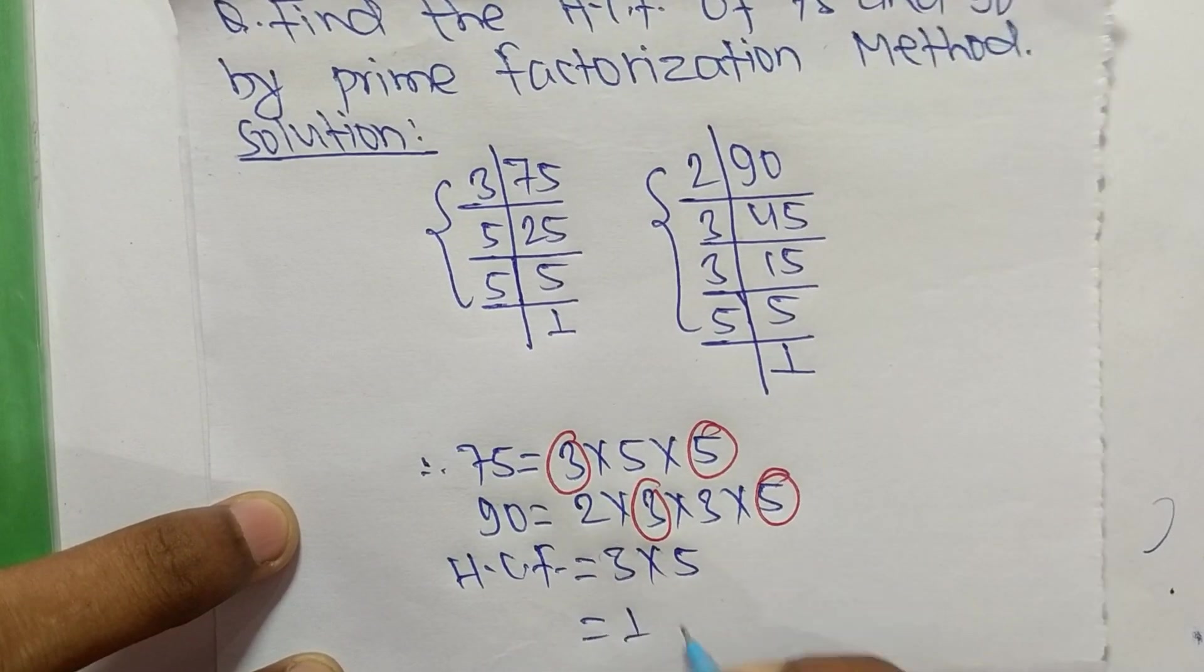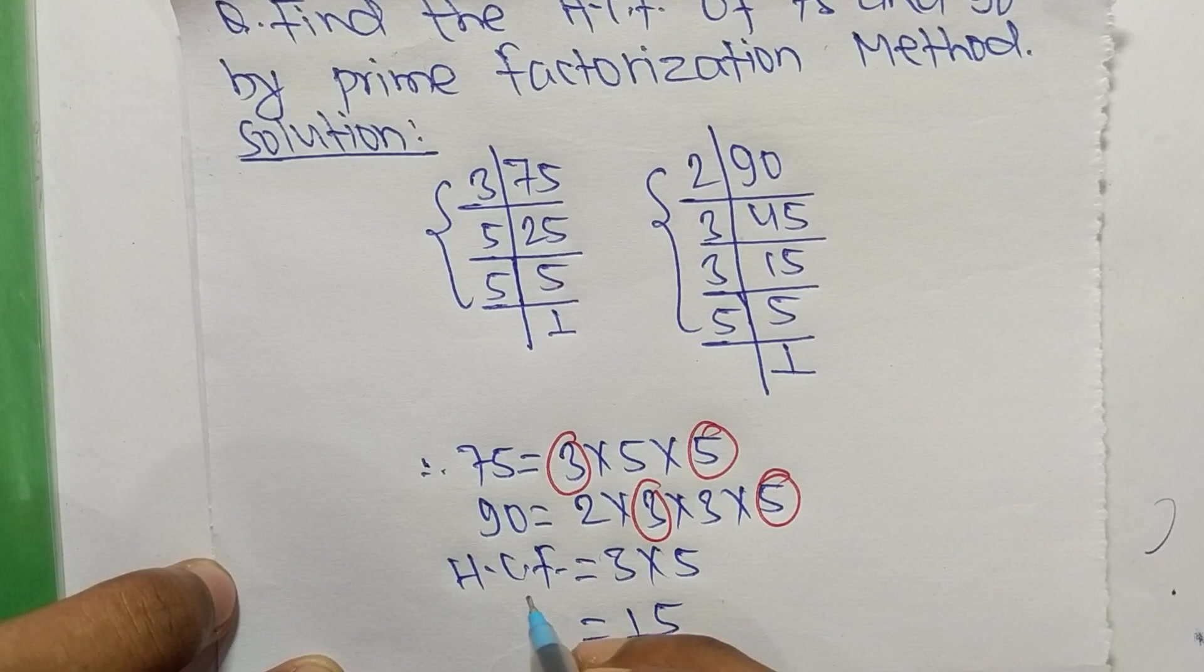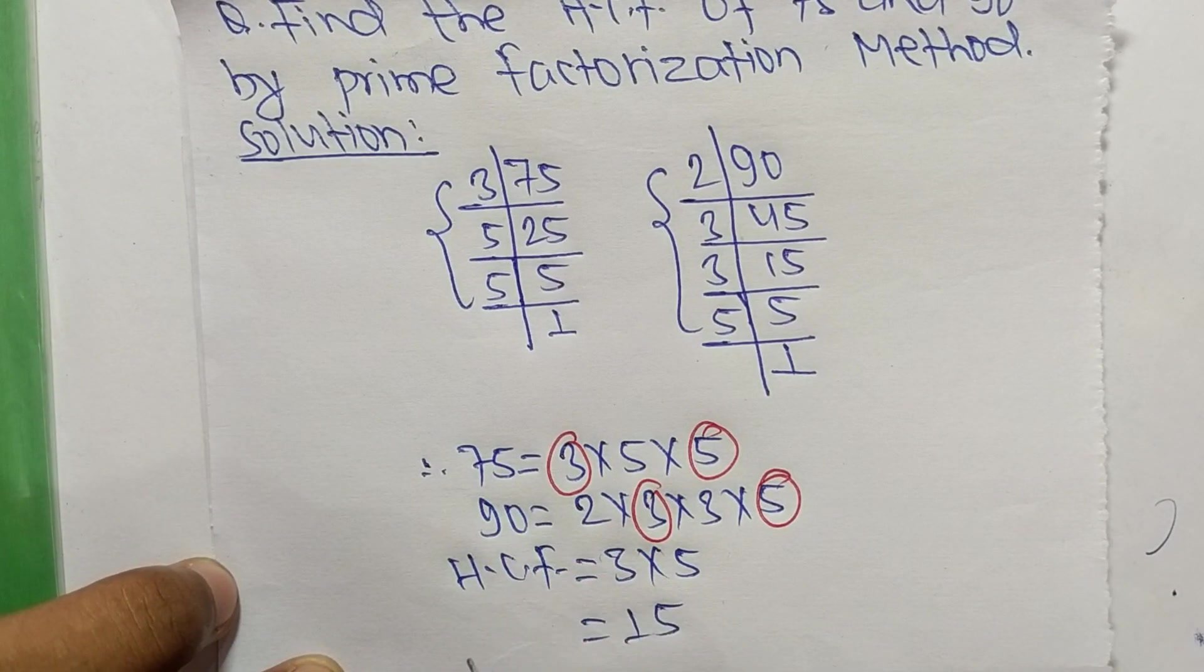So 3 times 5 equals 15. So 15 is the HCF of 75 and 90. So this is it for today and thanks for watching.